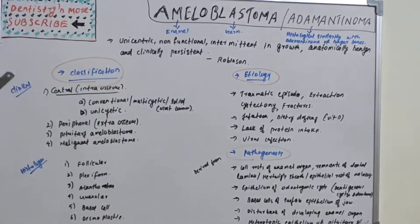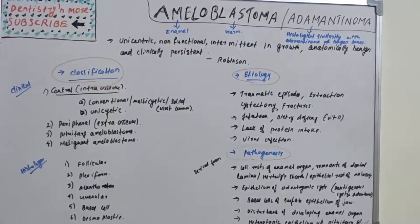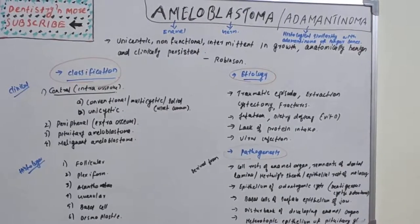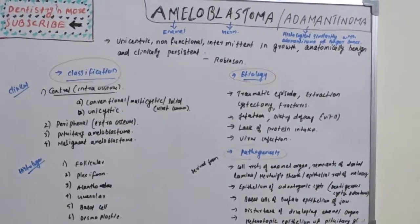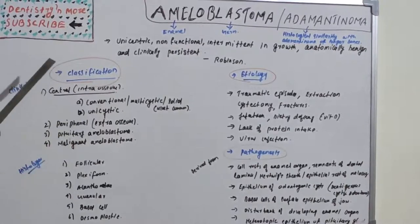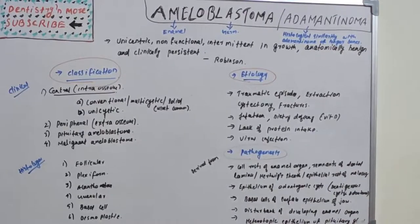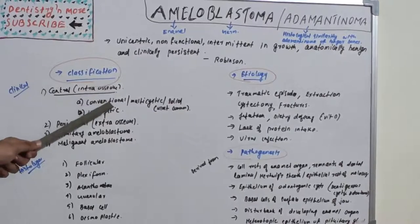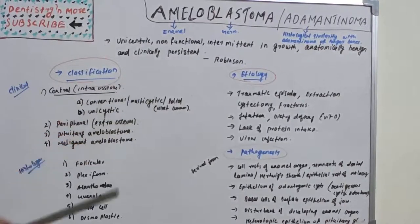We can classify it under two headings: clinical classification and histological classification. In clinical classification, the most common is the central variant — the intraosseous type — which includes the multi-cystic variant (conventional or solid) and the unicystic type. Other clinical types are extraosseous or peripheral, pituitary ameloblastoma, and malignant ameloblastoma. In the central type, multi-cystic is the most common variant.